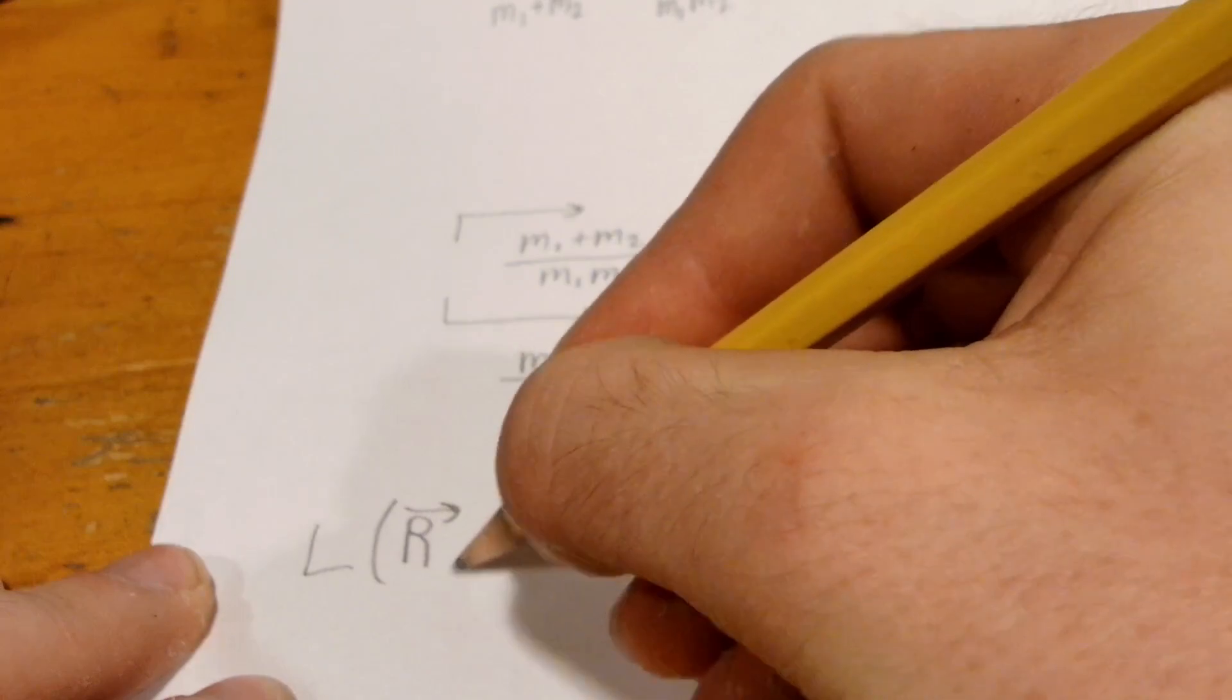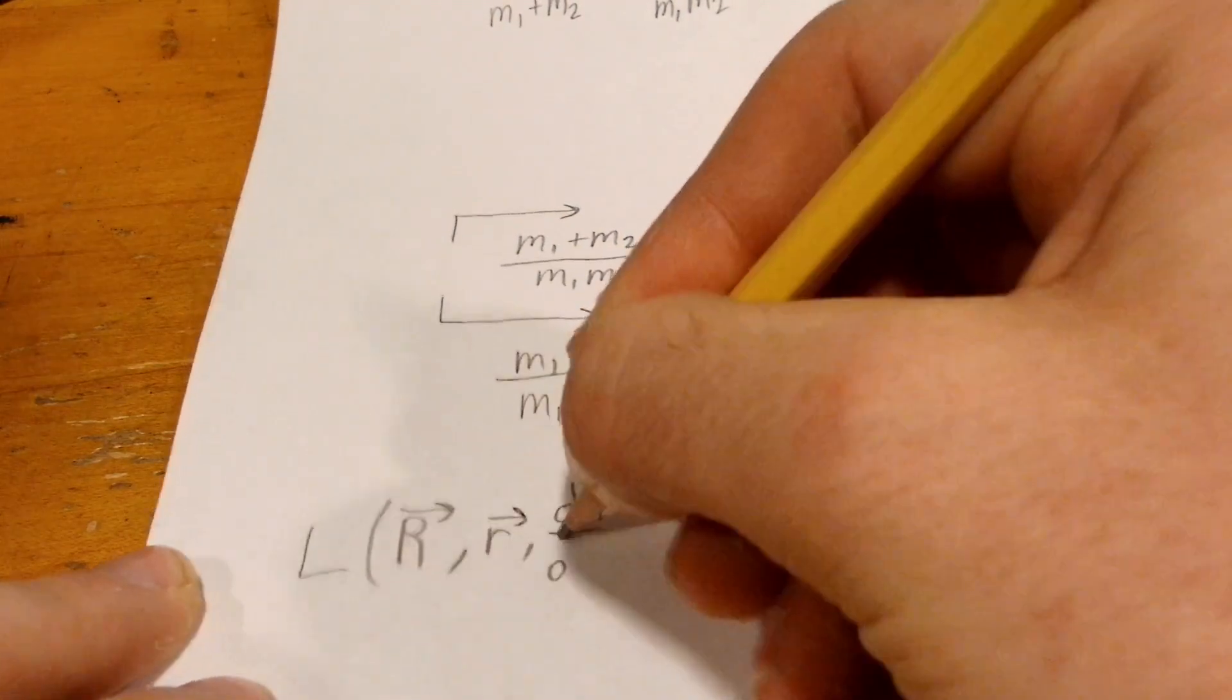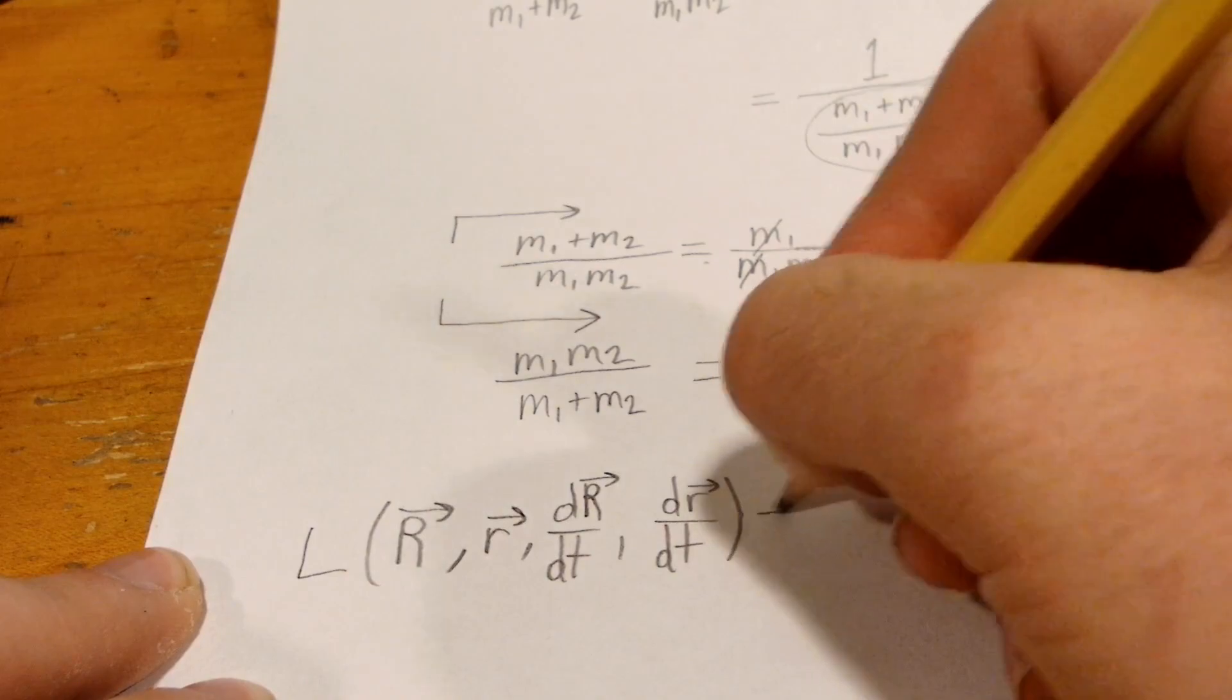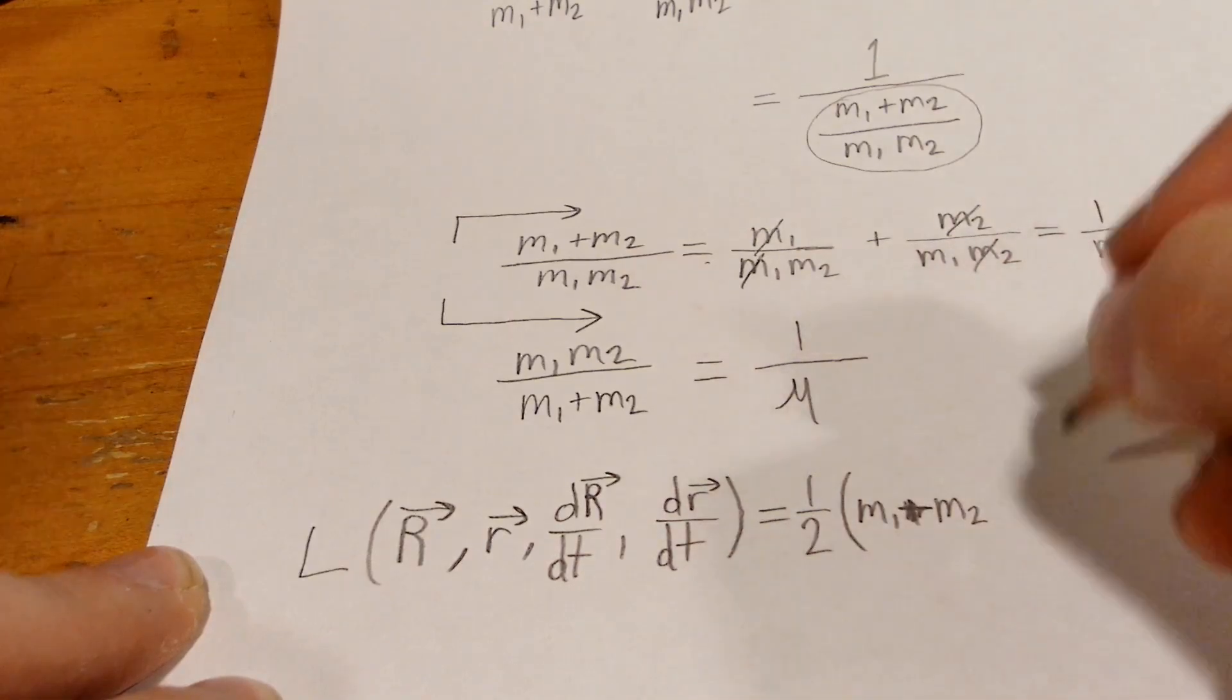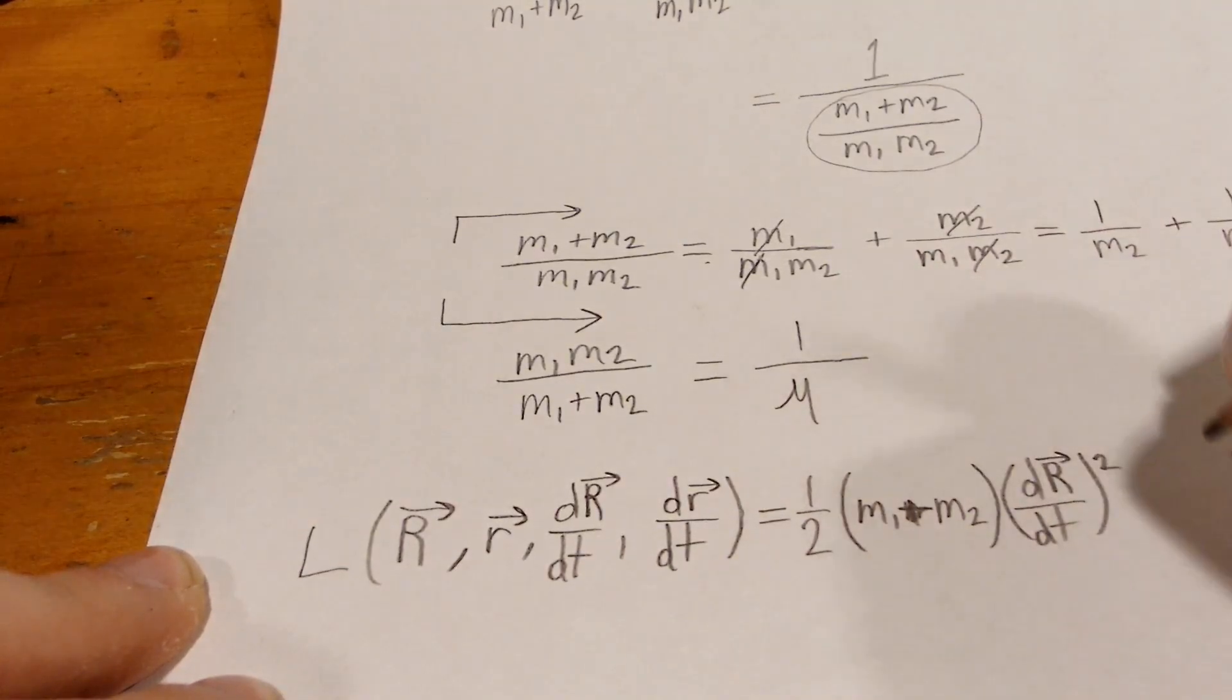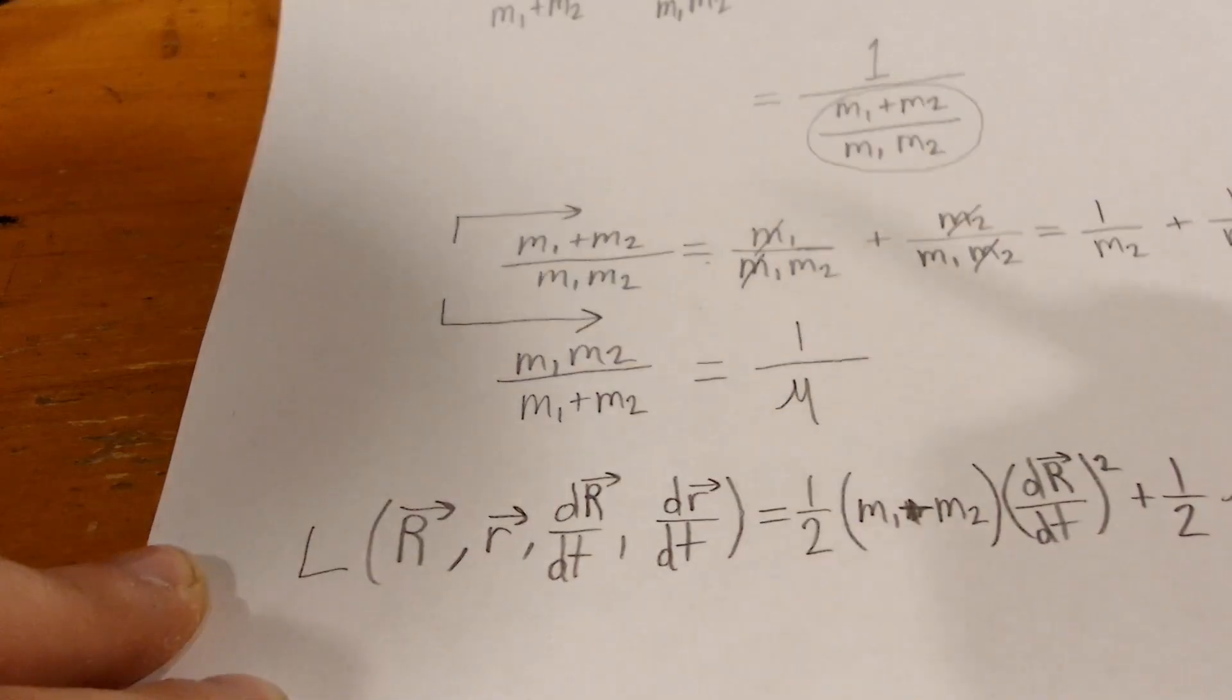So therefore we can write our Lagrangian in the form of the reduced mass. Let's compact it. Oops that is supposed to be plus. So this will be times 1 over mu.